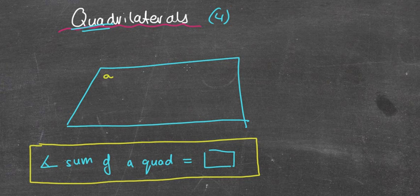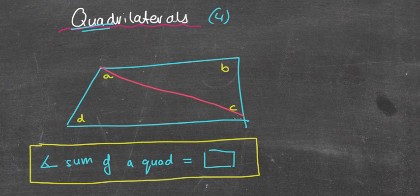That means if I have angles A, B, C, and D and I add those four angles together, they'll equal a particular number. Now we looked at how to prove that for the triangle using parallel lines and alternate angles. I'm going to show you a much easier method now for a quadrilateral. I've basically drawn a diagonal line from one corner to the other corner.